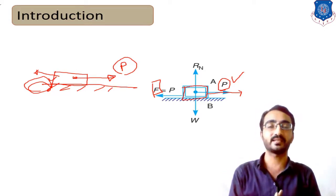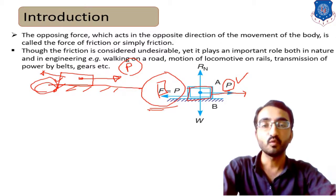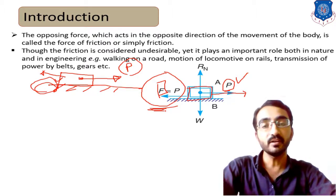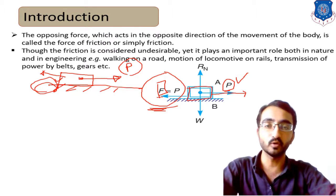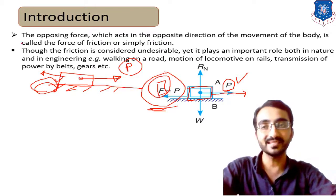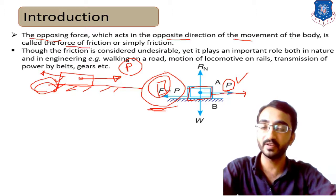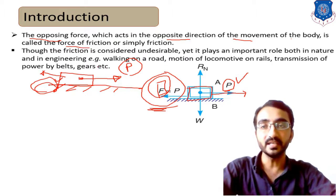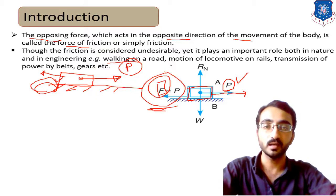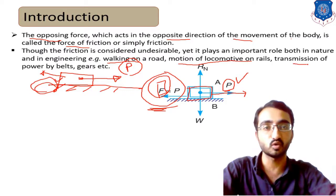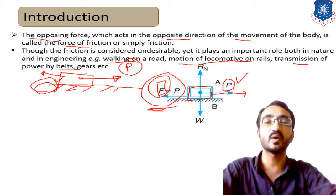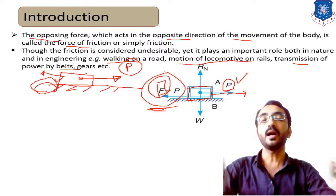In general we might prefer friction did not exist, but in reality without friction we cannot even walk on the earth. So it is a mandatory force for many applications. The opposing force acting in the opposite direction of the body's movement is known as the force of friction. It is mandatory for walking, motion of locomotives on rails, and power transmission by belt drive or gear drive.